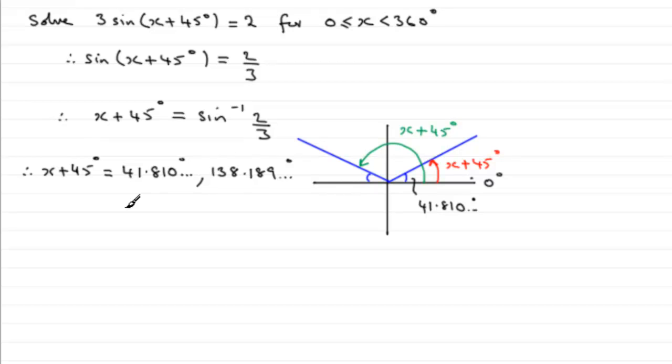So what I'm going to do is add 360 degrees onto this value here. And if we do that you end up with 401.810 and so on degrees. As I say, I know this is out of this range, but this is x + 45, not x.